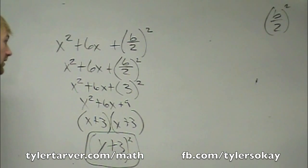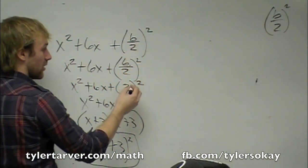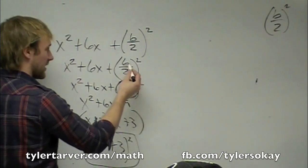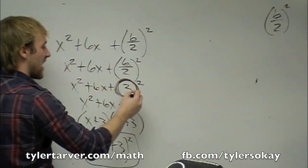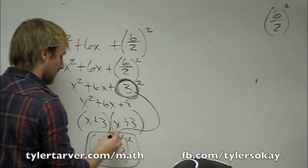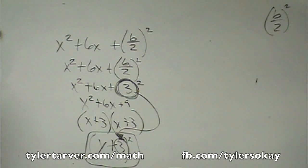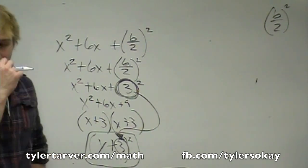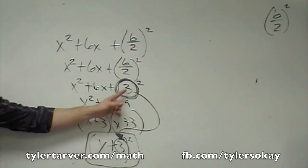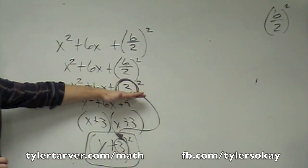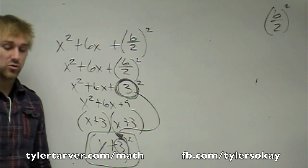Shortcut alert. When you get to the part where you do b divided by 2 — we got 6 divided by 2 which is 3 — that's the number that would go right there in the binomial. So if you want, once you get there you can skip some steps and go straight to that, because you know that's where it's going to be.